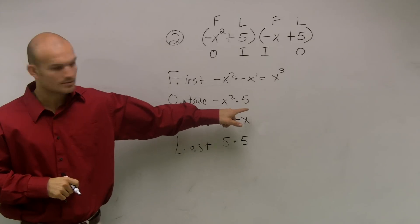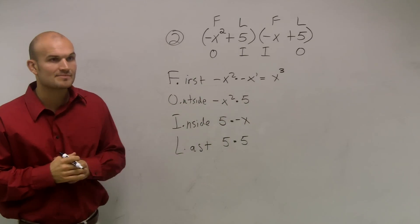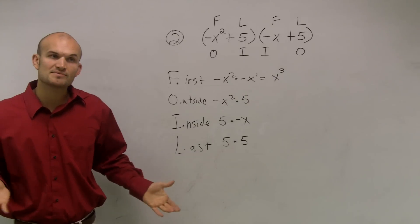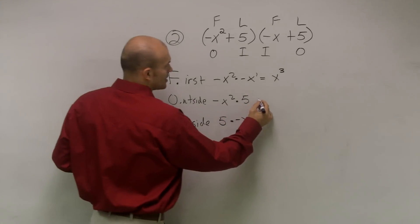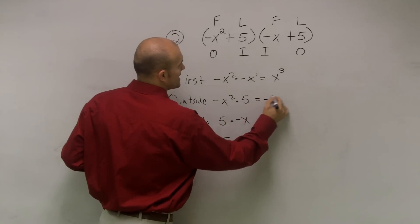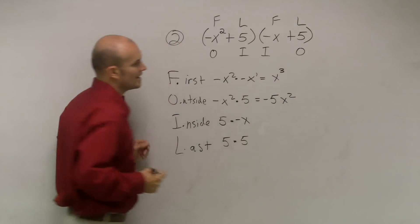Here, I'm multiplying a number times a variable. If you just multiply a number times a variable, it's just going to remain your number times a variable. So this becomes now a negative 5 x squared.